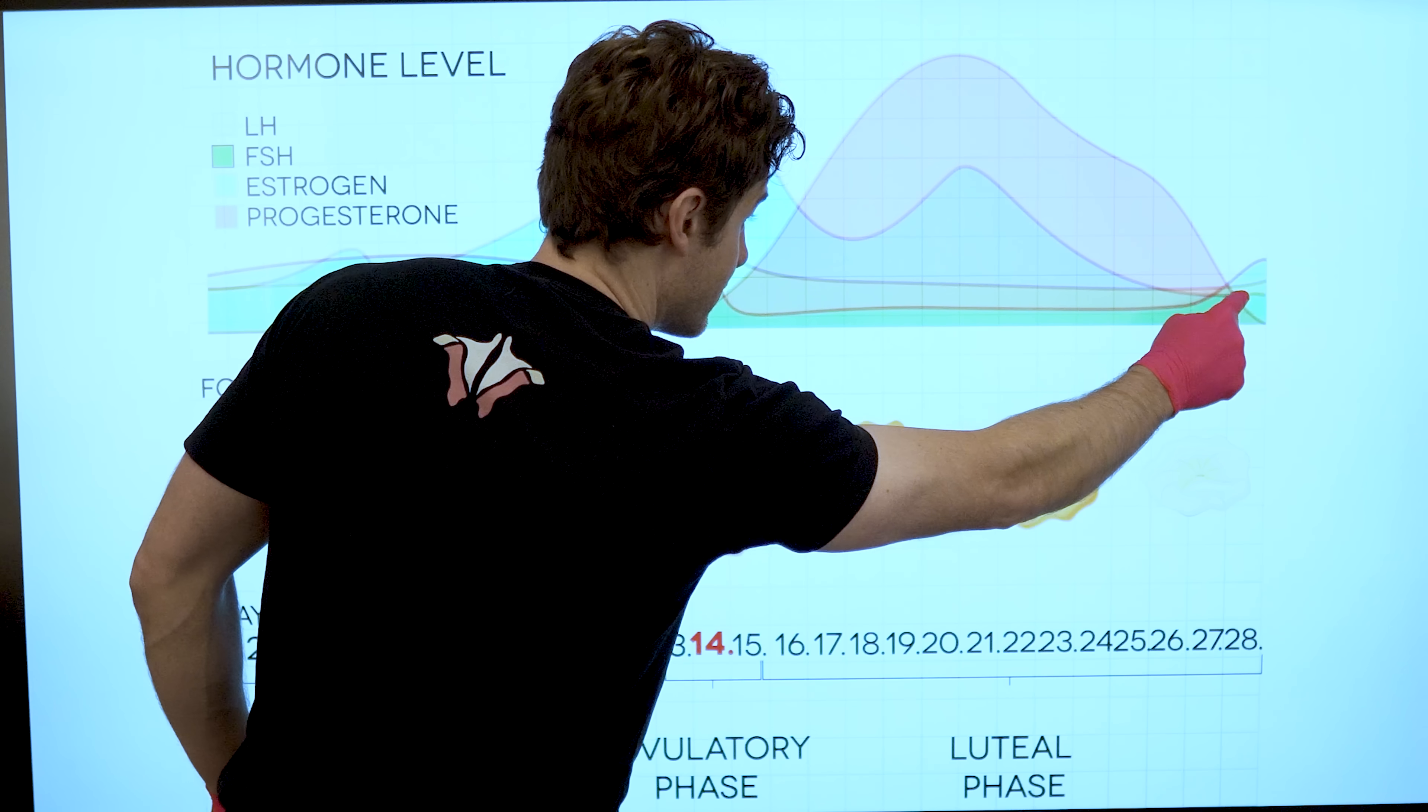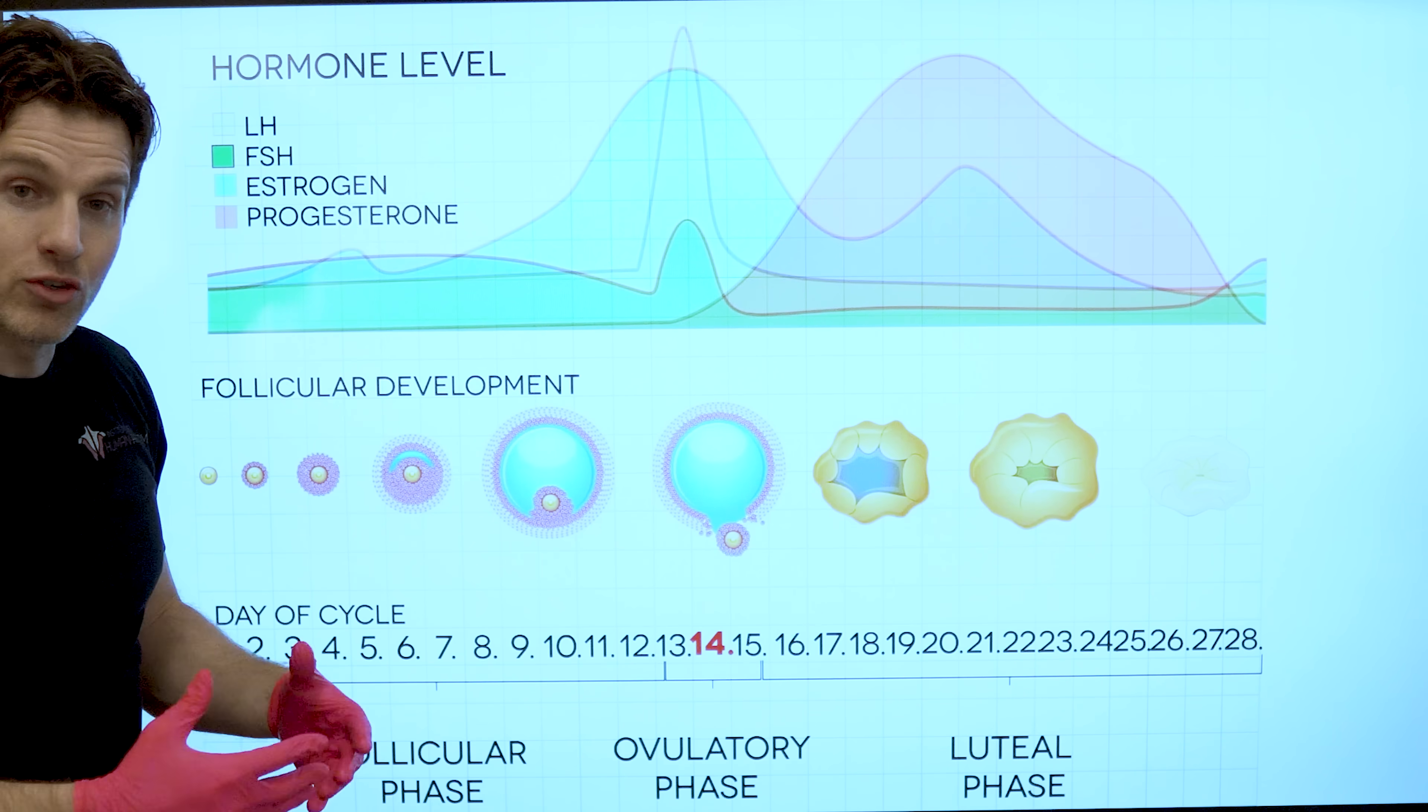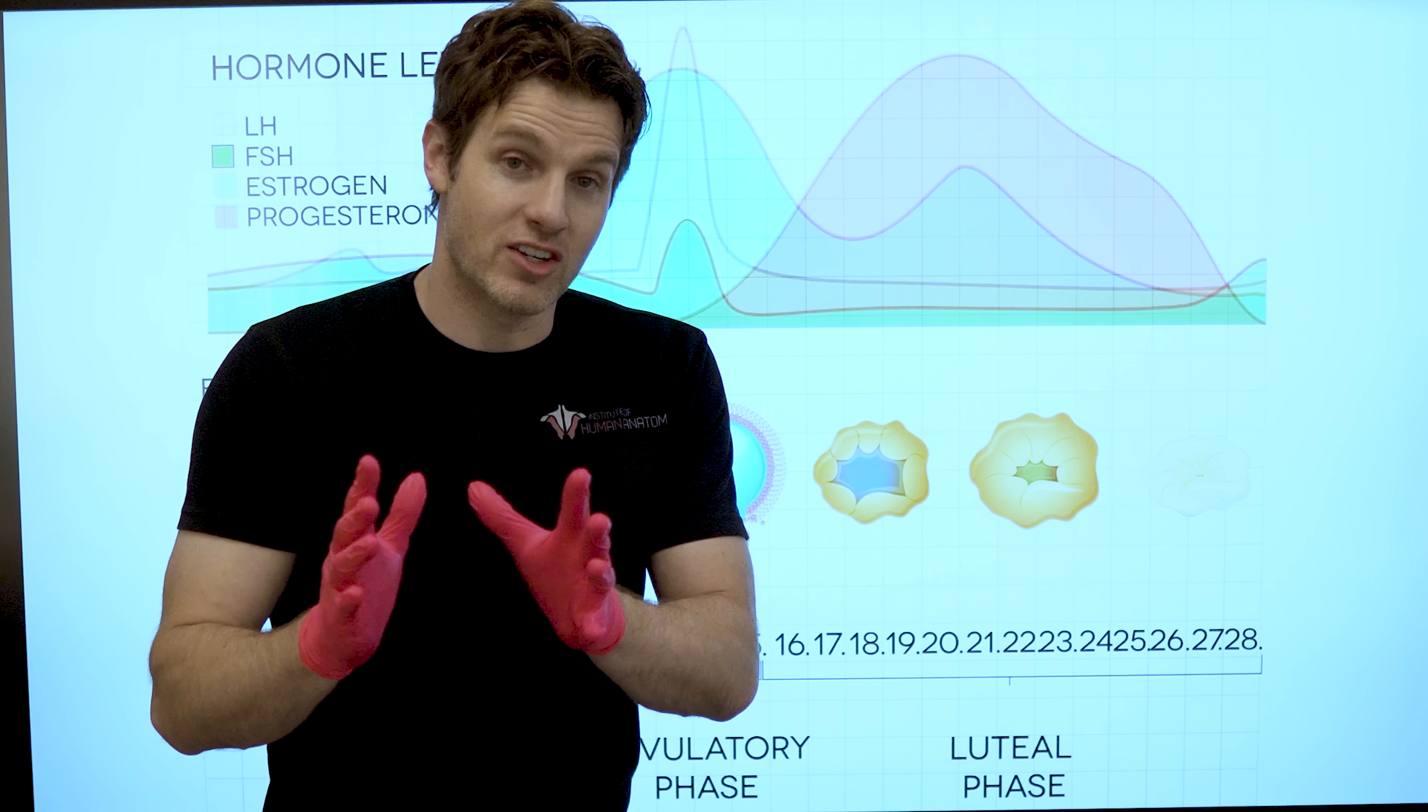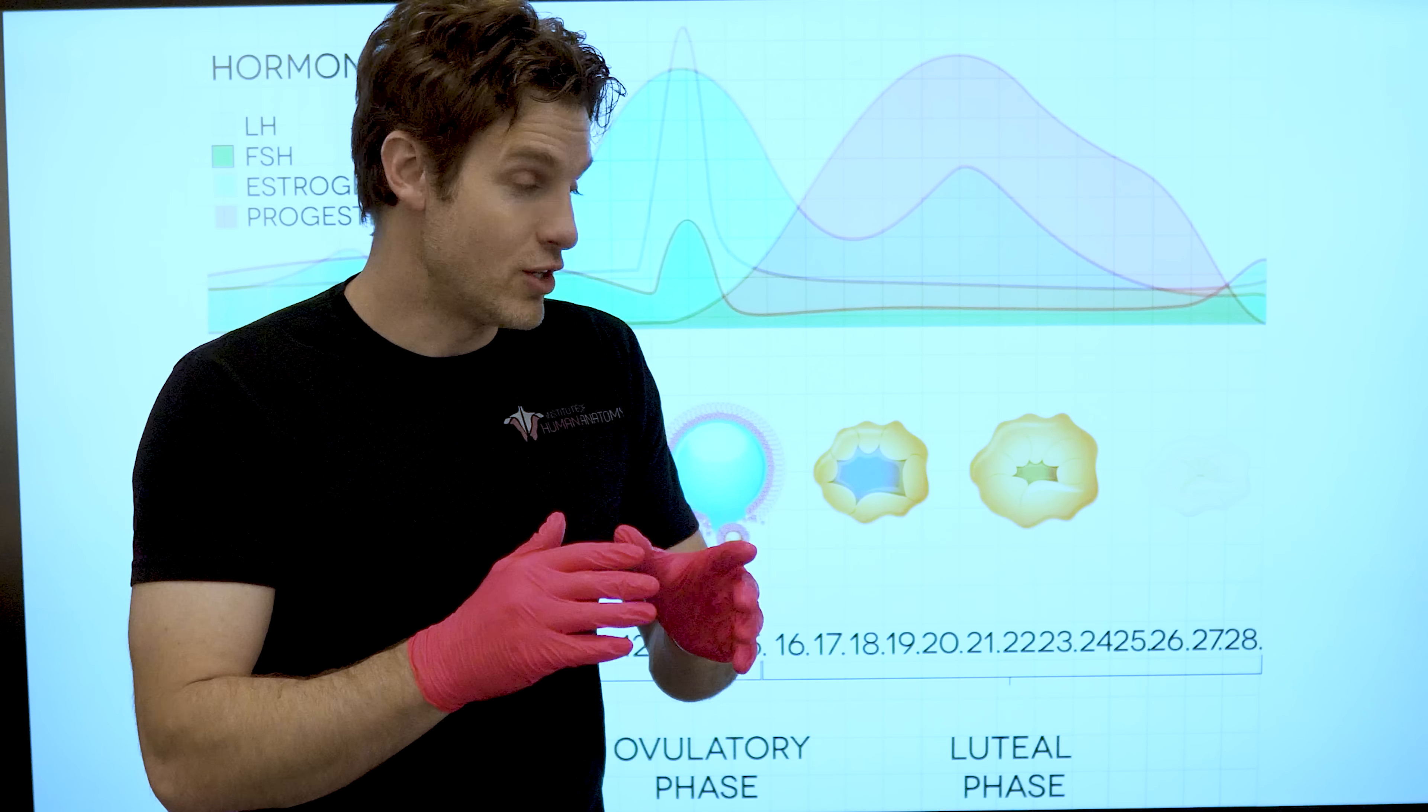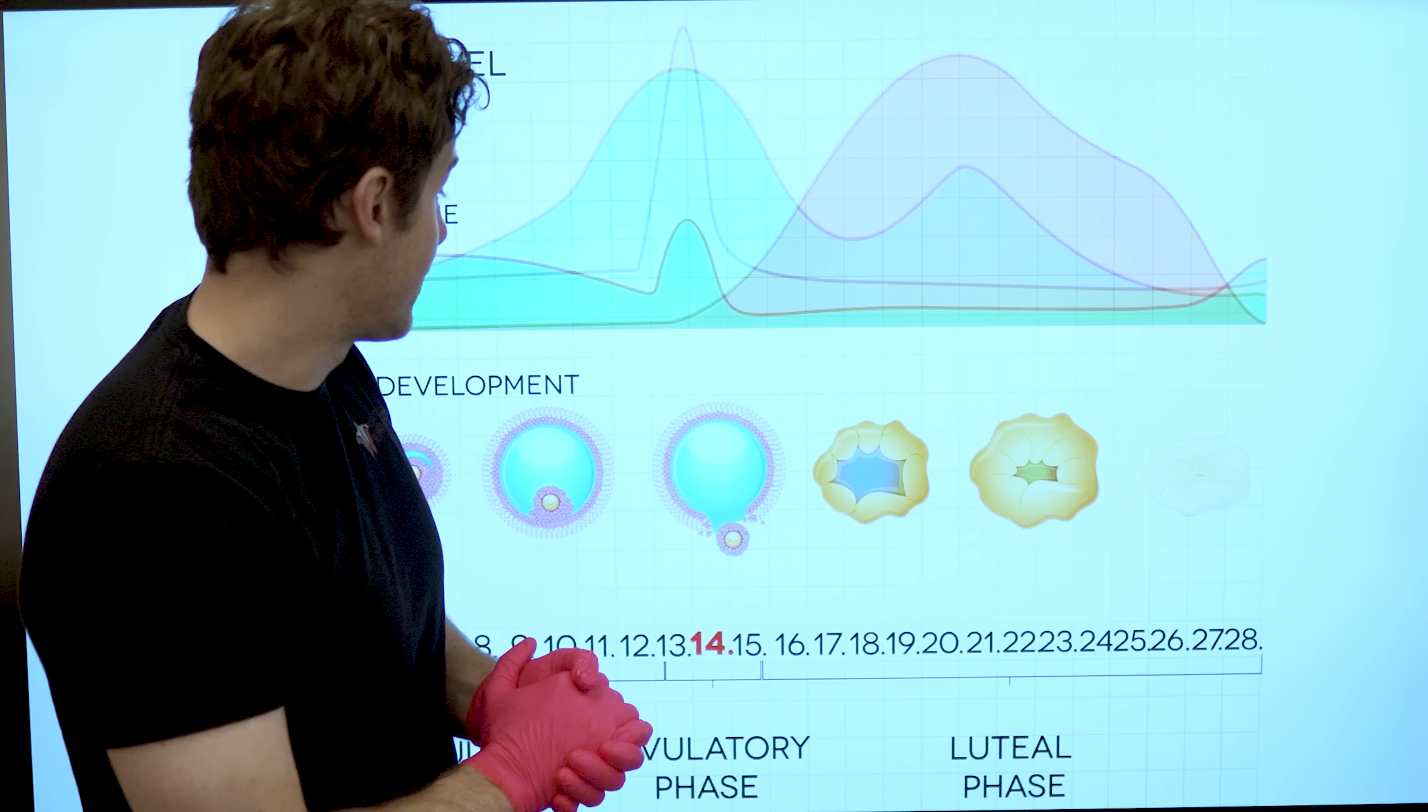Once this happens, if pregnancy doesn't occur, we just start back over at the beginning. But if fertilization does take place and the egg becomes a zygote because it got fertilized by a sperm cell and it does implant in the uterus, that actually will sustain the corpus luteum throughout pregnancy. And so it won't actually degrade. We'll talk about that in a little bit more detail in just a second.